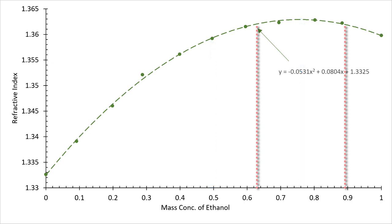In this scenario, there is no concentration below 0.63 that corresponds to an index of 1.363. This means that our other possibility, 0.89, is the correct concentration for the sample.